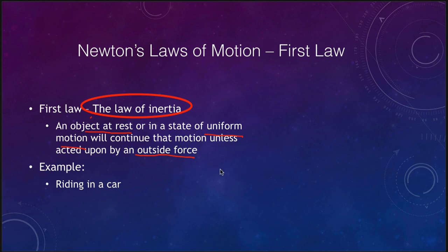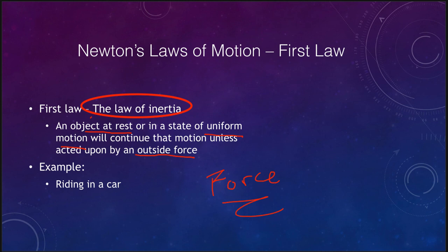Objects in a state of uniform motion will continue unless there is an outside force. This also means that if an object is not at rest or not in uniform straight-line motion, there must be a force acting on it. Anything that is accelerating — speeding up, slowing down, or moving in a curve such as an orbit — must have a force acting on it.